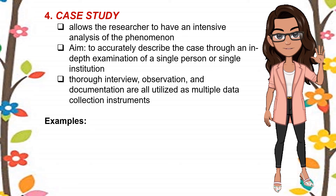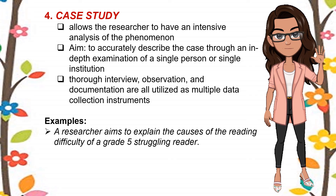The fourth kind is case study. It is a qualitative research kind which allows the researcher to have an intensive analysis of the phenomenon. The aim is to accurately describe the case through an in-depth examination of a single person or single institution. Thorough interview, observation, and documentation are all utilized as multiple data collection instruments. Example: a researcher aims to explain the causes of the reading difficulty of a grade 5 struggling reader.